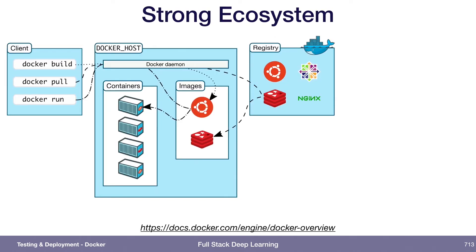You can stand on the shoulders of giants because people build, for example, Python images. Those images probably start with a basic Linux image and install all the Python dependencies, then make that available. You can start from the Python image without worrying about installing Python dependencies — you can already assume it exists and just package up your own stuff. Then maybe someone else on your team uses the image you created and adds something else to it. There's a whole notion of a Docker ecosystem which is really quite strong.